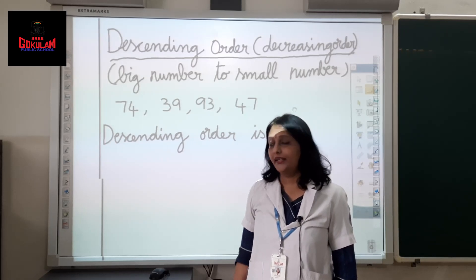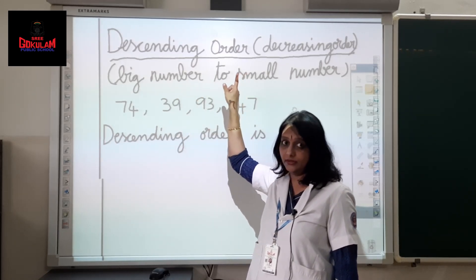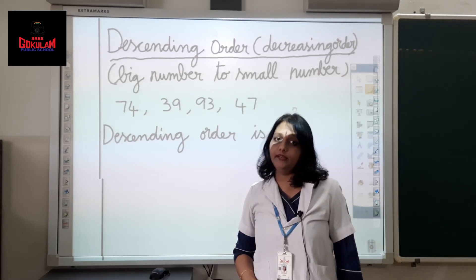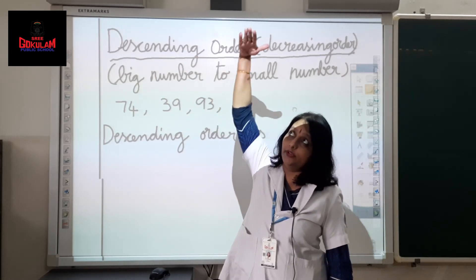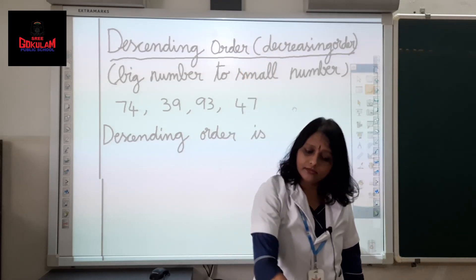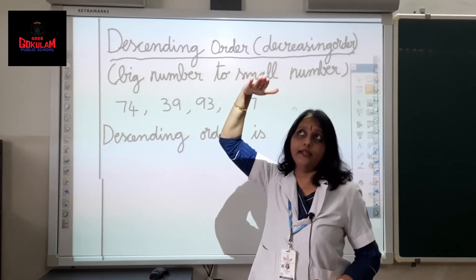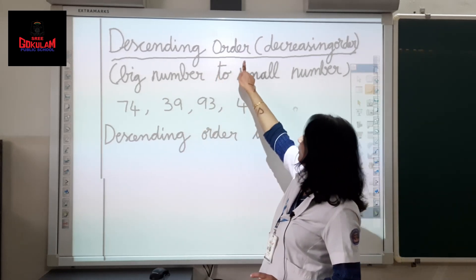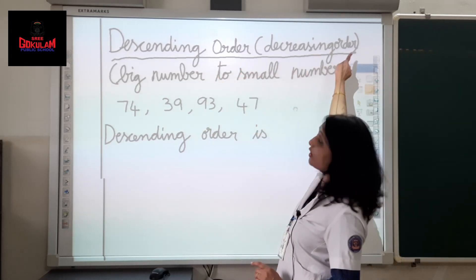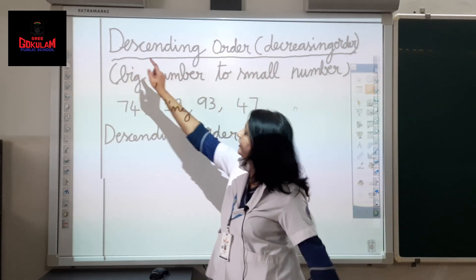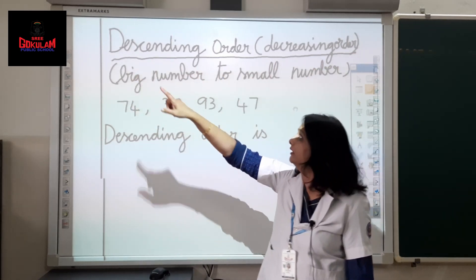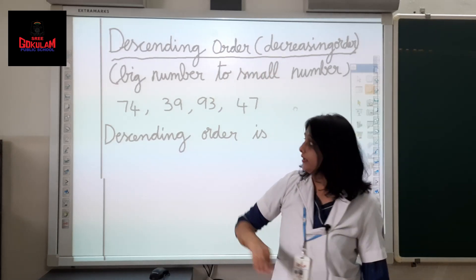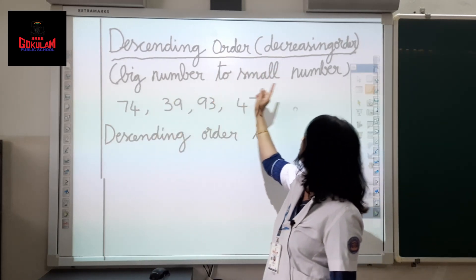Next: descending order. Descending order is decreasing order. Have you seen an aeroplane landing? It will come down and land — the height is decreasing. Descending order is decreasing order — D and D, remember! Descending order means big number to small number.